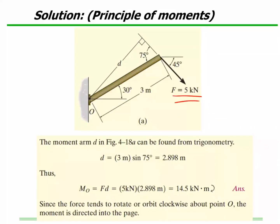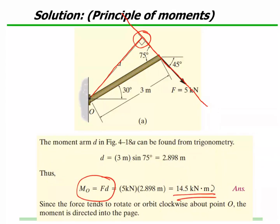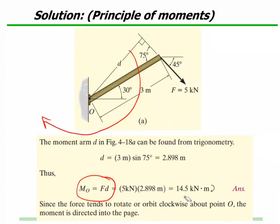We've got a scenario where the force is being applied. We draw a force line and then find its perpendicular distance, which is given here. So force into perpendicular distance — that gives you your moment. Because the moment is about point O, the tendency is to rotate clockwise, so this would be a negative number. There is no negative sign given here because it is mentioned that it is clockwise.